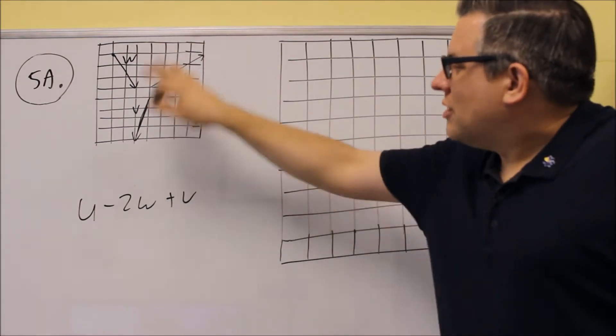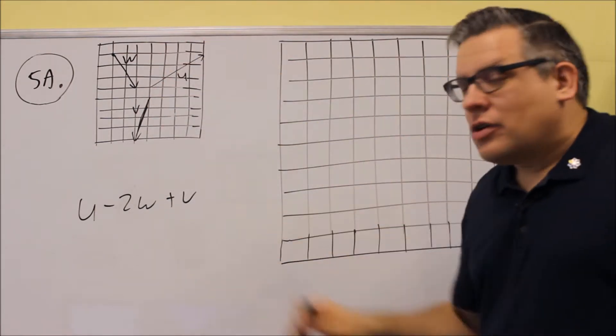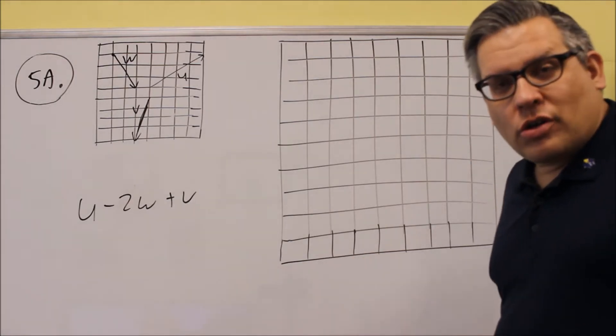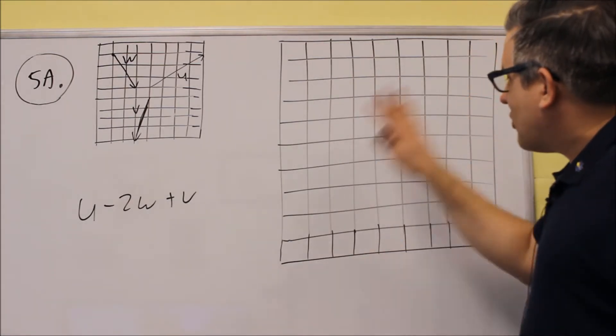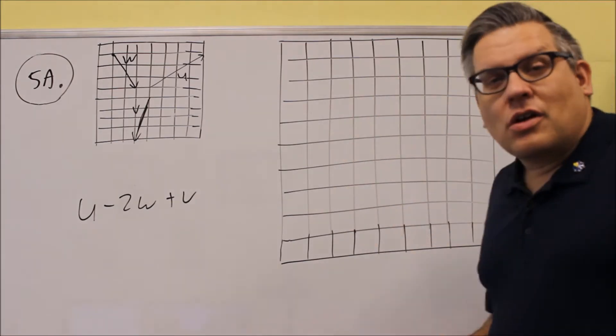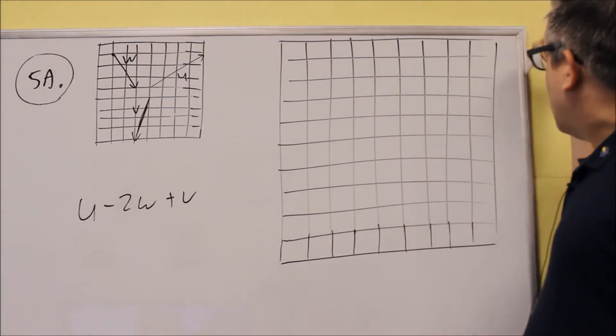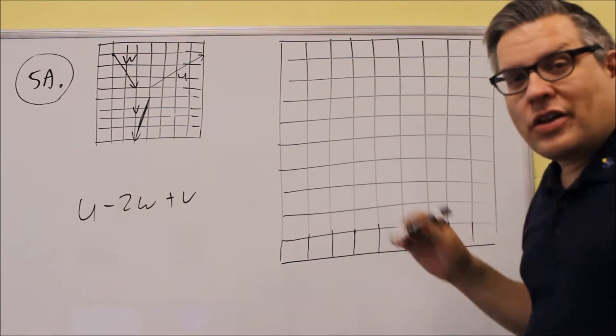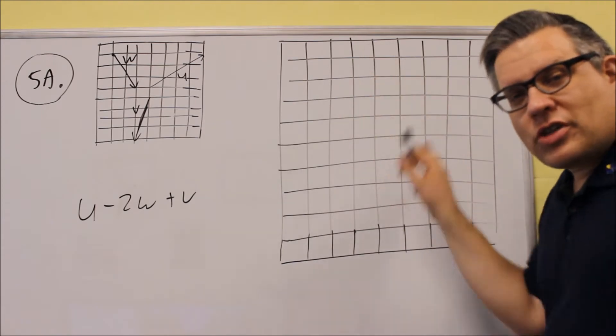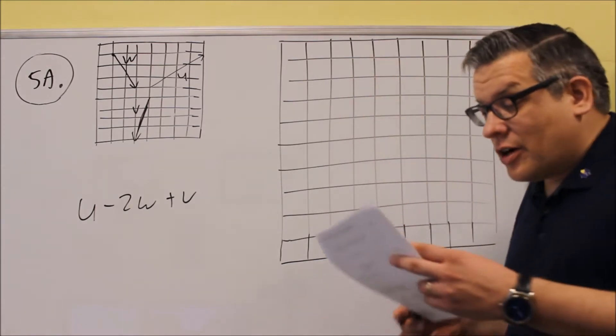You want to use these in order to draw U minus 2W plus V. Now it doesn't matter which order you start this from. It doesn't matter where in the grid that you do it as long as your answer ends up fitting inside here. If you have to extend the boxes out on the other side, that's okay, but I'll make it to where you should be able to fit your entire answer within the given box that's there.